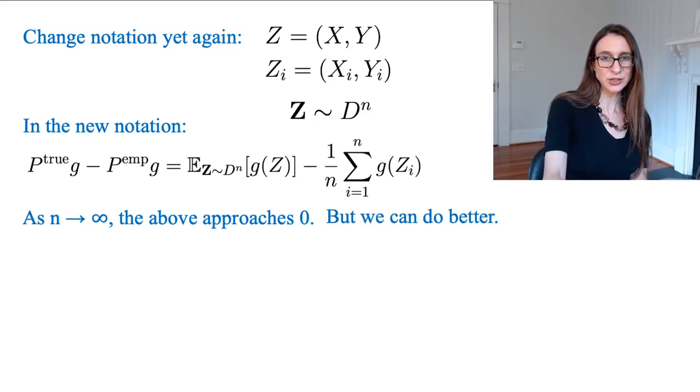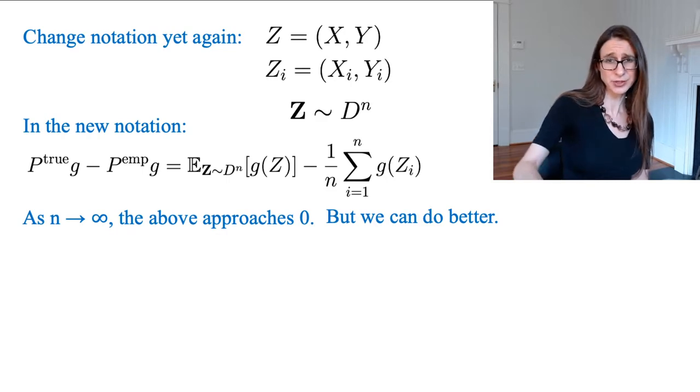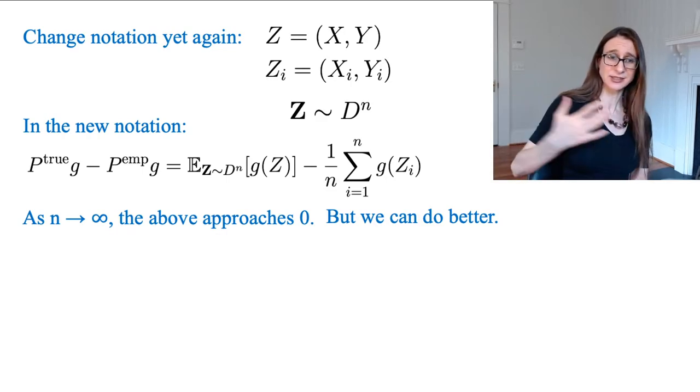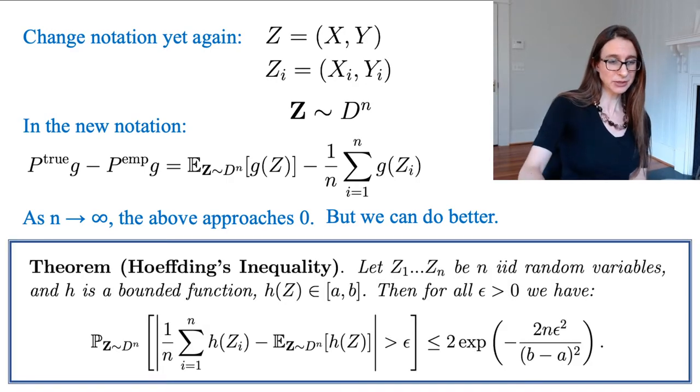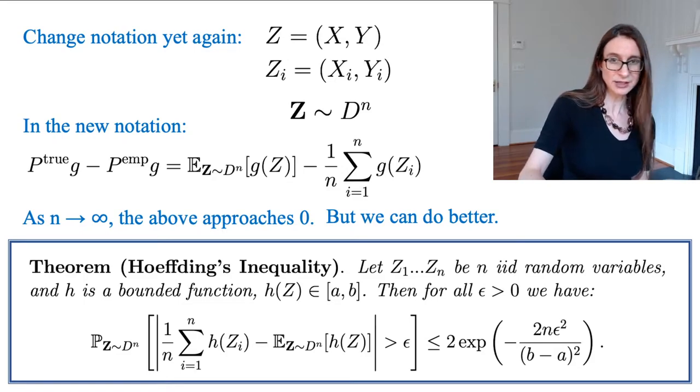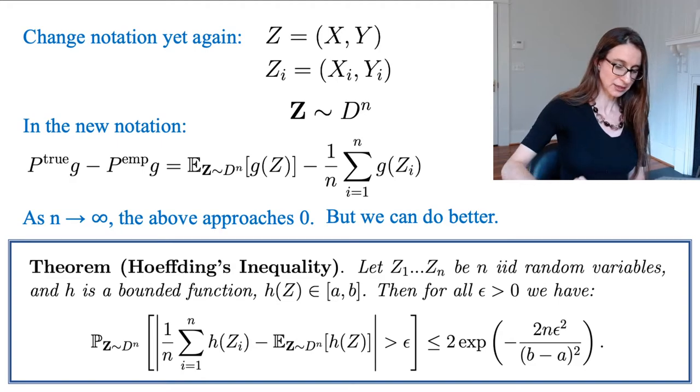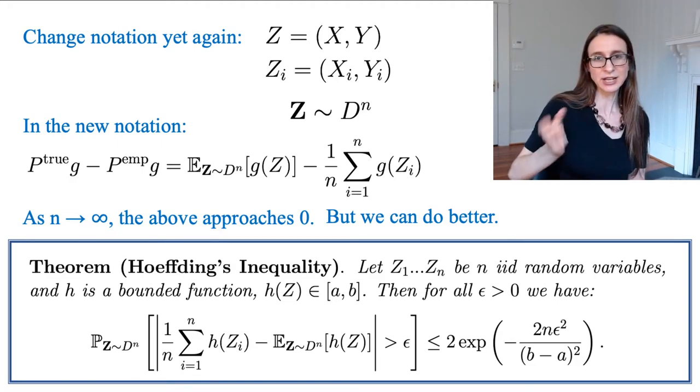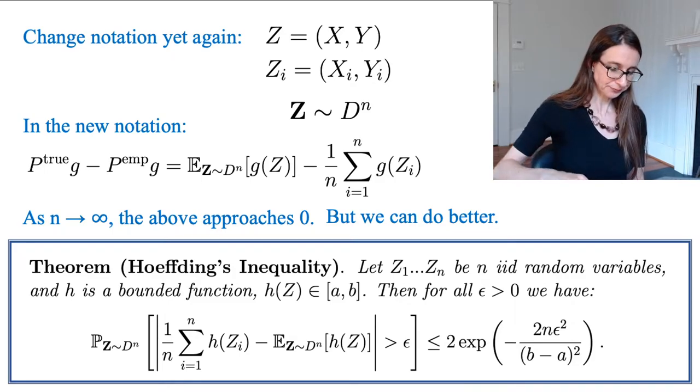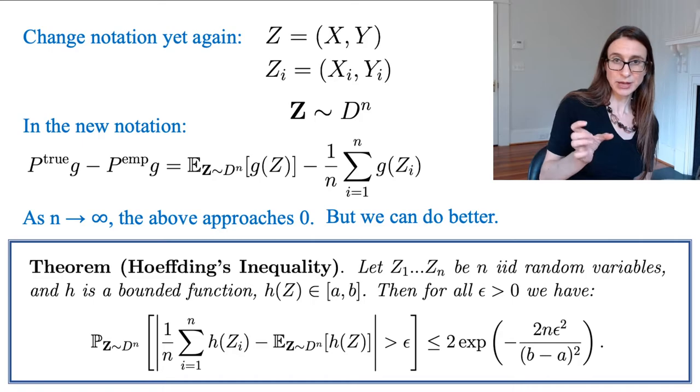However, we can actually do better. We want to do better. We don't just want to think about asymptotics as the number of data points goes to infinity. We actually want to do something with the data that we have. And so that's why we're going to use Hoeffding's inequality. So Hoeffding's inequality is a very famous tail bound from statistics. And it's very powerful. And it bounds how far an expectation is from an average.